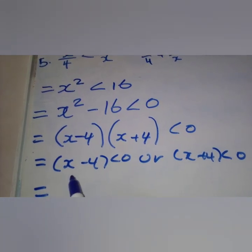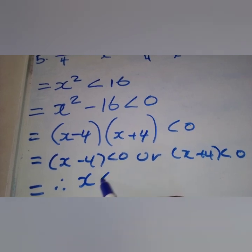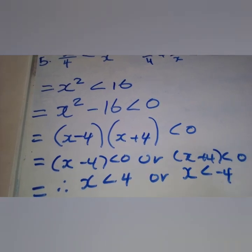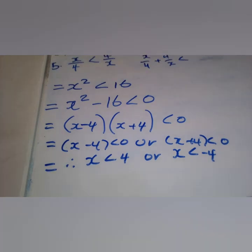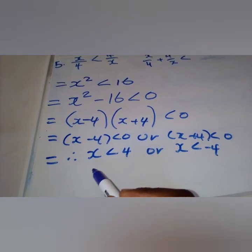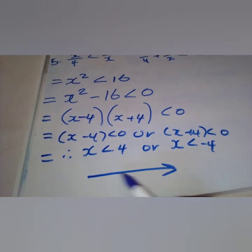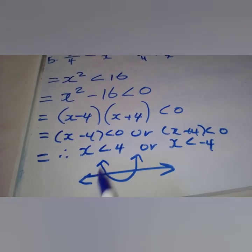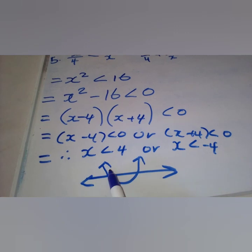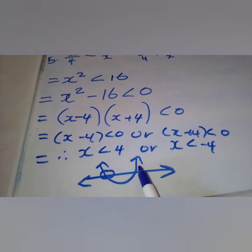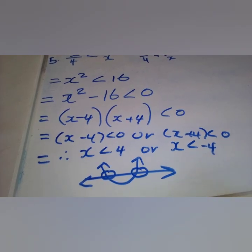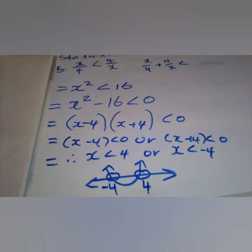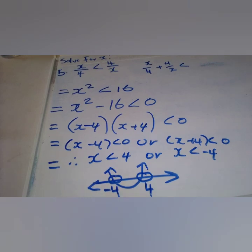Transposing gives x < positive four or x < negative four. We represent our answers graphically using the parabola. Since we have strictly less than — no equal sign — we use the open dot. The positive number, four, goes to the right and the negative number, negative four, goes to the left.